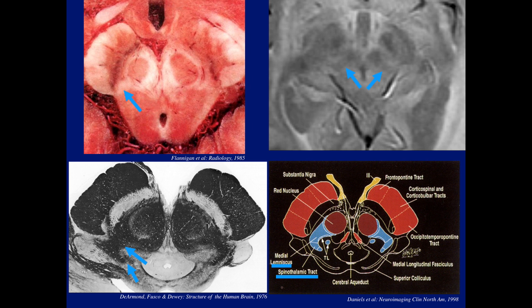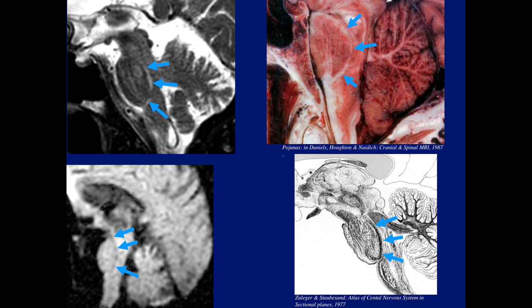Higher up, it's posterolateral to the red nuclei. Here are the red nuclei — this is the medial lemniscus with the spinothalamic tract. On sagittal planes we can also see the structure. This curved structure is the medial lemniscus on the specimen, here it is on MR, on sagittal diffusion image, and on histologic section. We can identify all of these on MR.